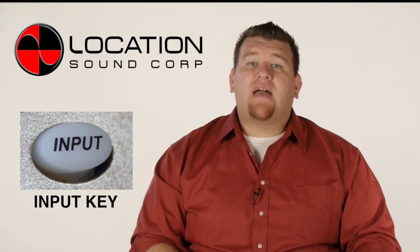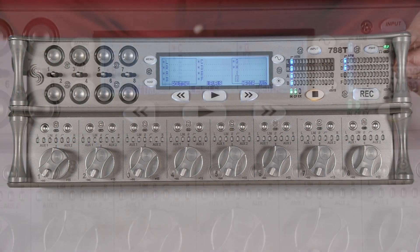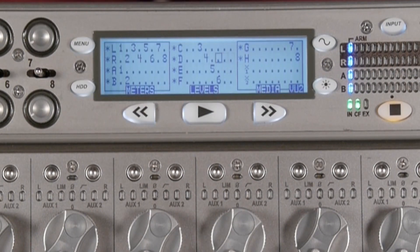The input key will access your track setup menu, for which the user can arm, disarm, route, and view meter activity for all 12 tracks.